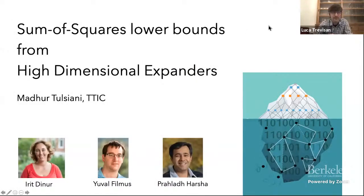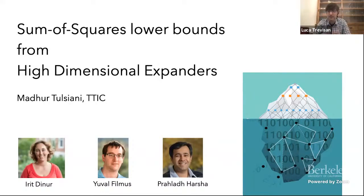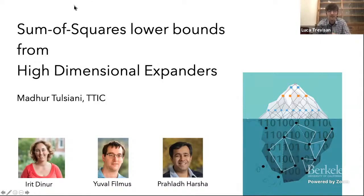Welcome everybody back to this afternoon or evening session. This topic will be pseudorandomness and lower bounds. I would like to ask all the speakers to make sure to stay within their allotted eight minutes, and also ask the audience if they have a quick question to ask it at the end of the talk. If they have a longer question, maybe hold it until the end of the session where we will have time for a longer discussion. We start the session with a talk on sum of squares lower bounds using high dimensional expanders, and Madhur is going to give the talk.